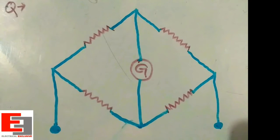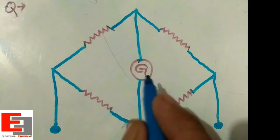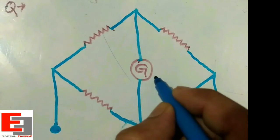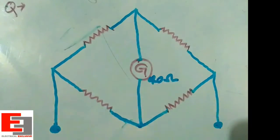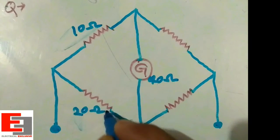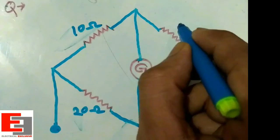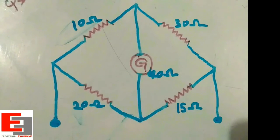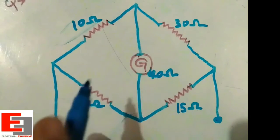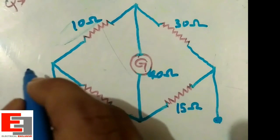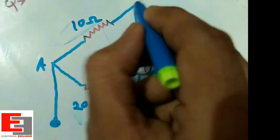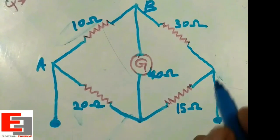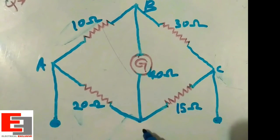This is the second question. In this question a galvanometer is connected here; its internal resistance is given as 40 ohm. This resistance is 10 ohm, this is 20 ohm, this resistance is 15 ohm, and this resistance is 30 ohm. There are two deltas in this electrical network, so to solve this question we need to transform one of the two deltas into star. This point is A, this is B, this is C, and this is D.